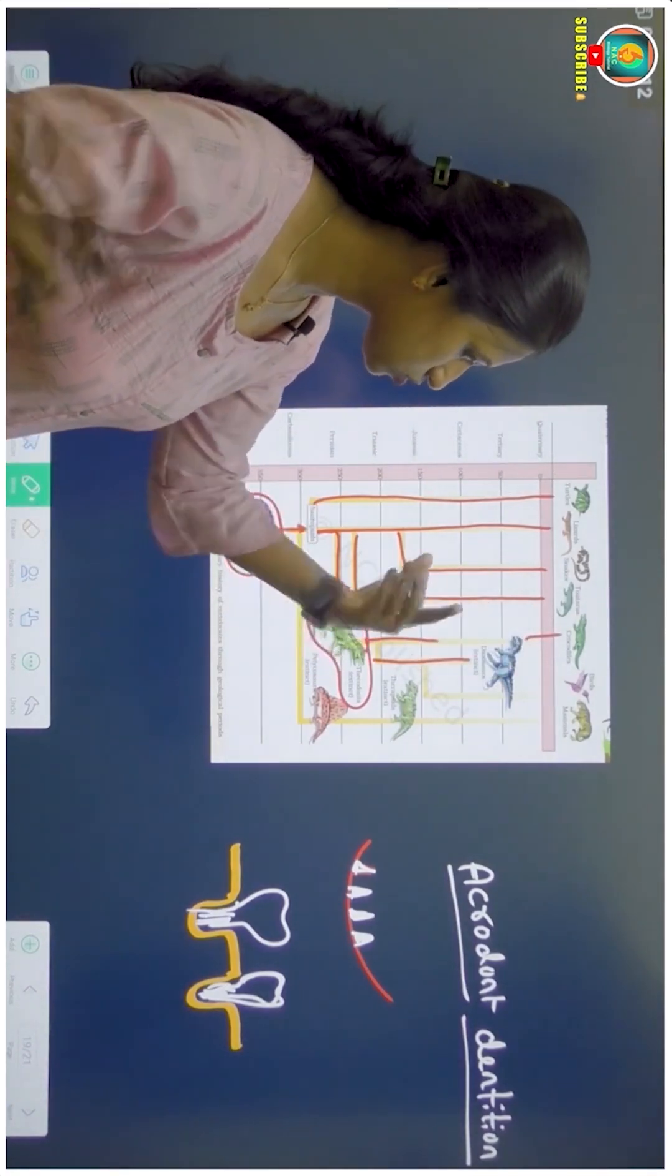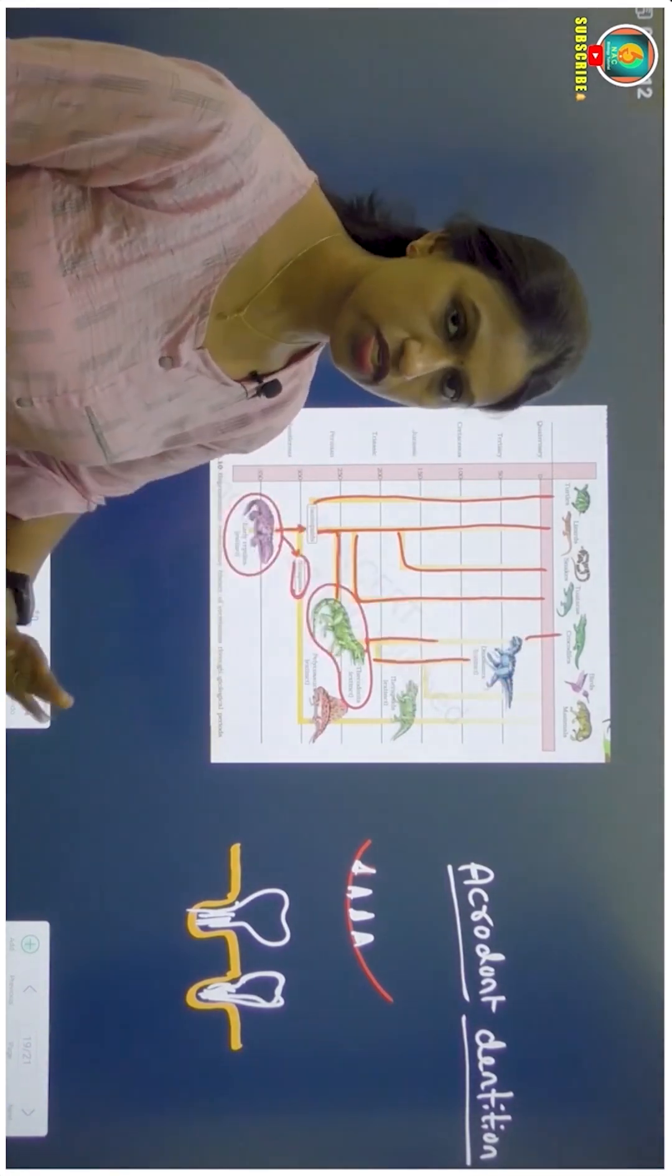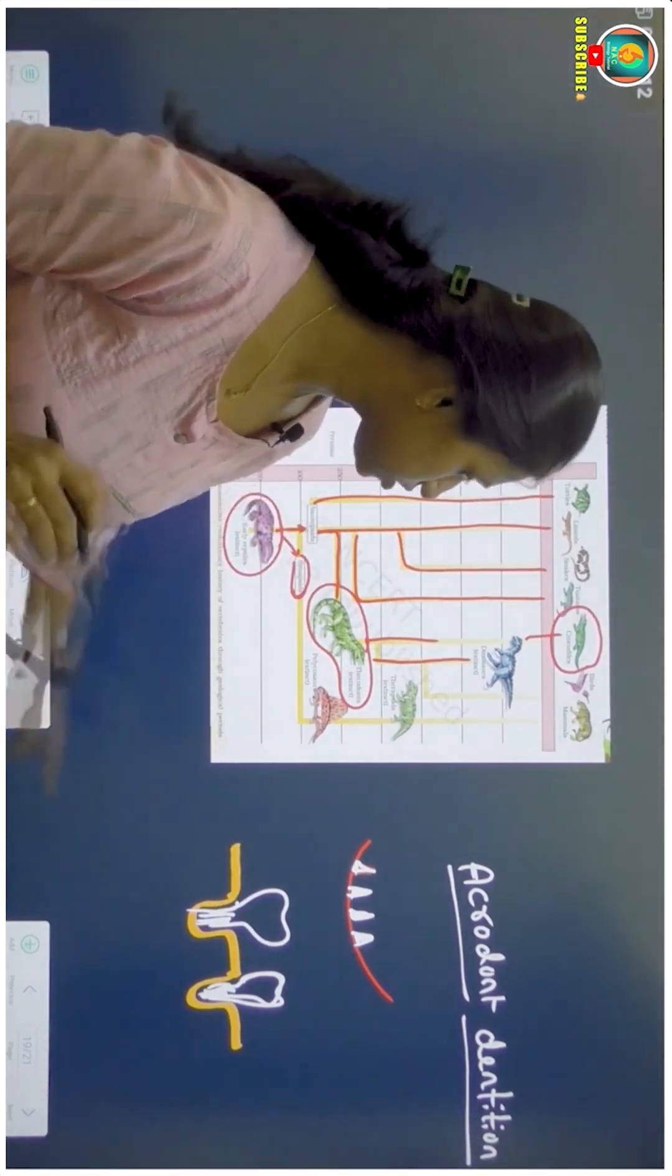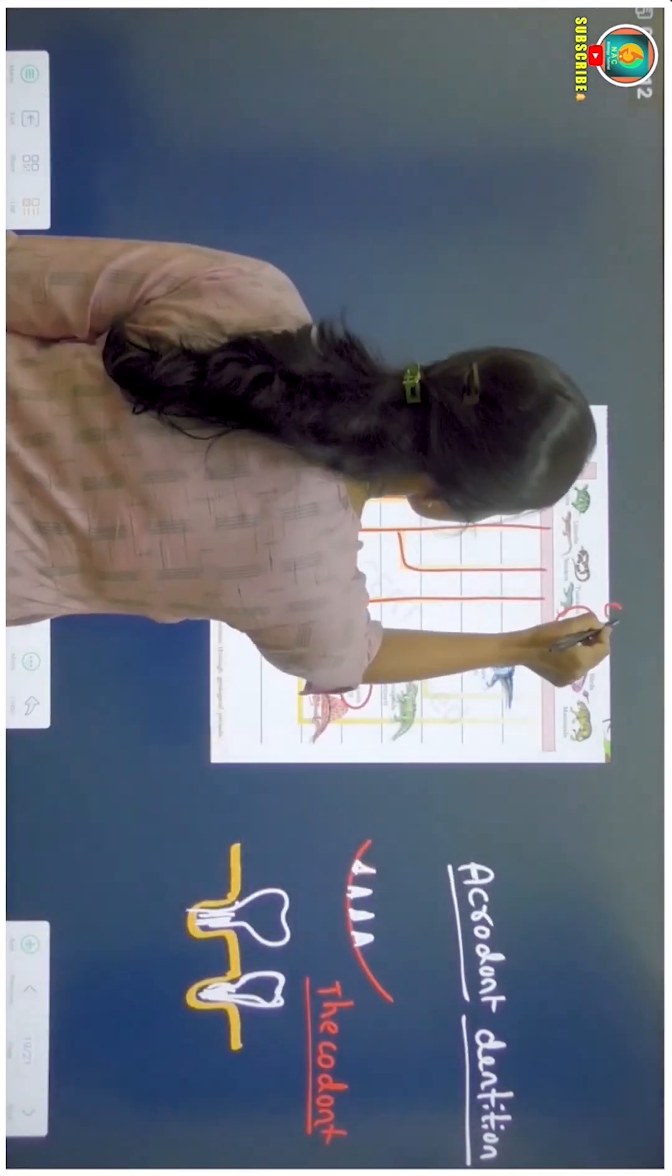Now these thicodonts got extinct, and the dinosaurs also got extinct. They were having this thicodont dentition. Name the reptile which is having thicodont dentition. That is nothing but crocodile.